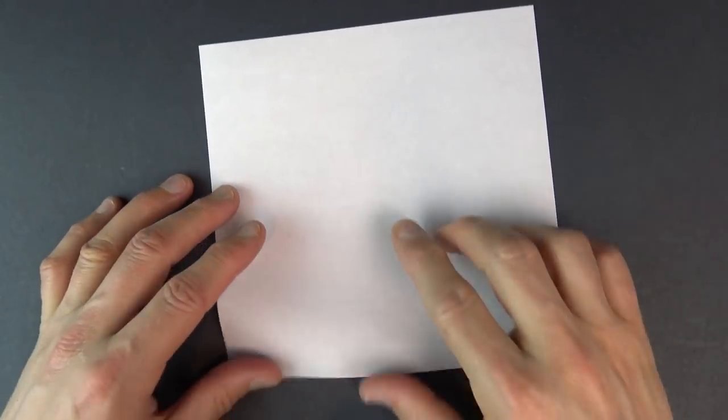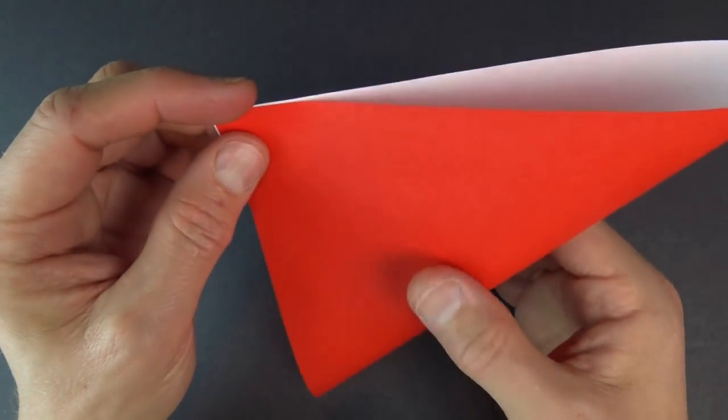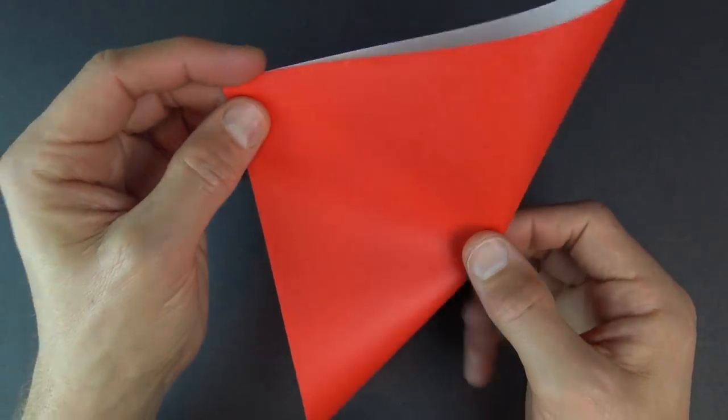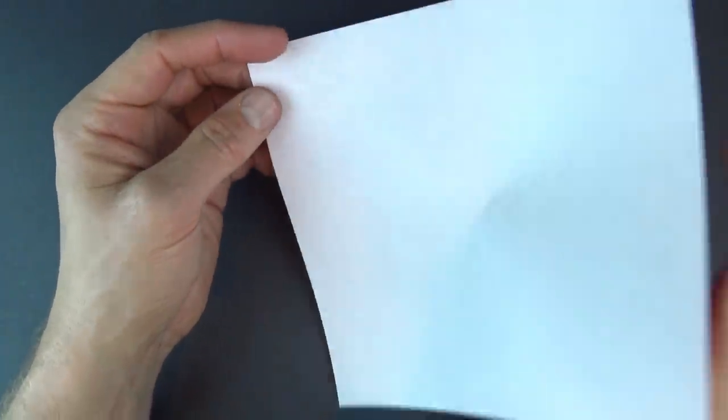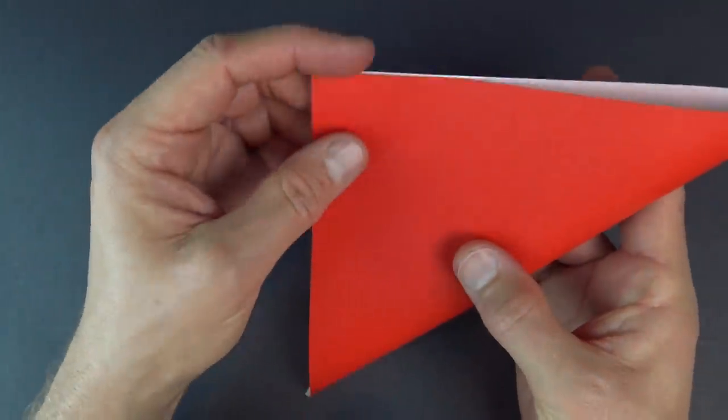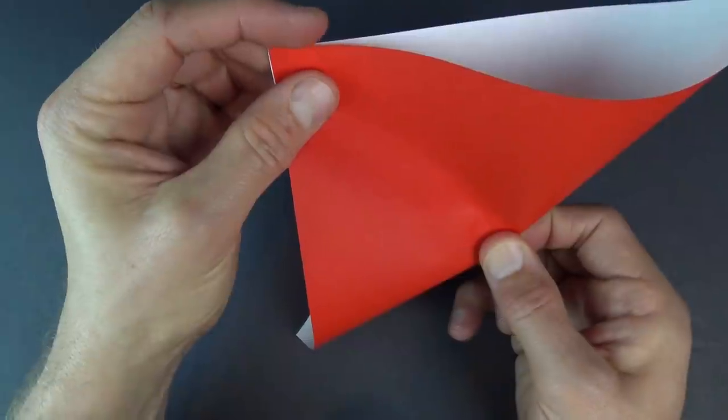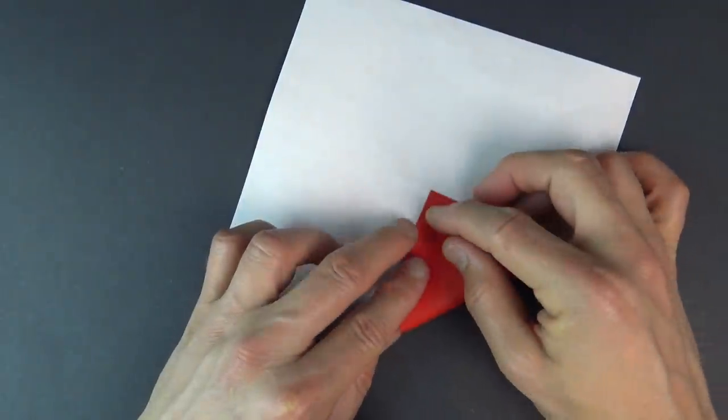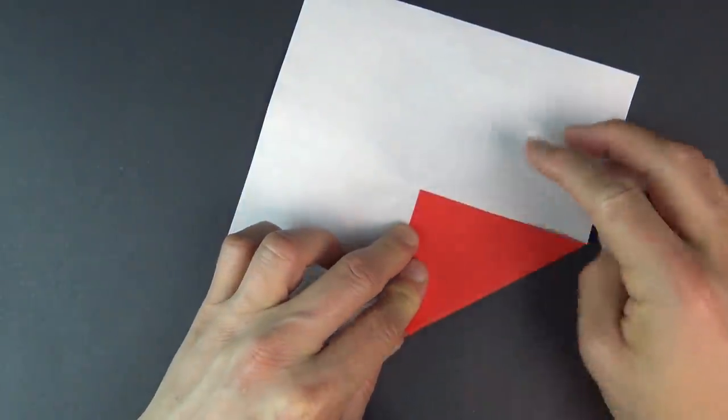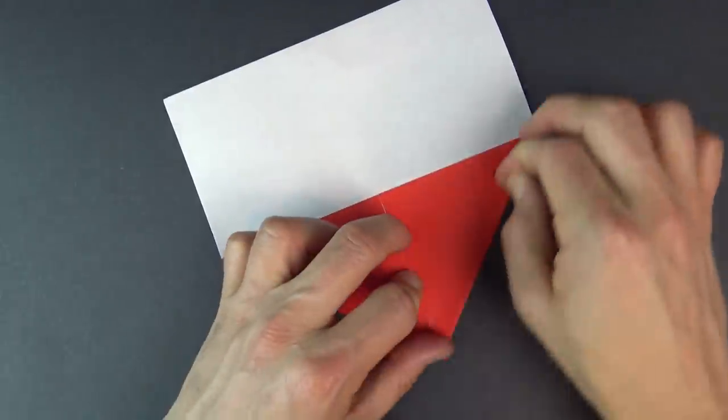First, we need to establish the center. So, bring two opposite corners together, and just make a little pinch mark right in the middle. And unfold, and now bring these two corners together and make another pinch mark. And hopefully, those two pinch marks will intersect, and fold all four corners to that intersection point. Make sure to make really precise folds, and crease sharply.